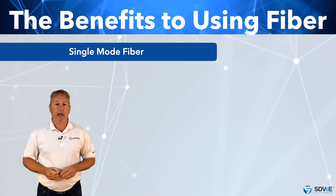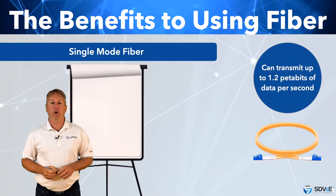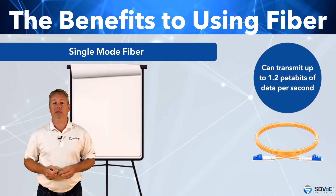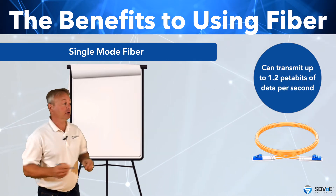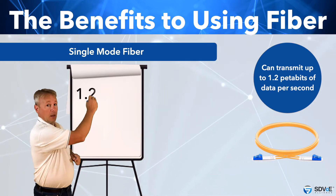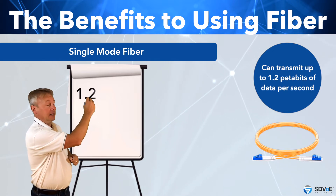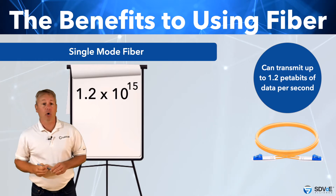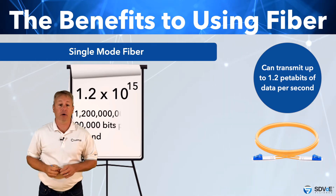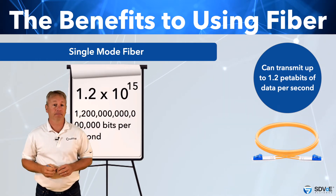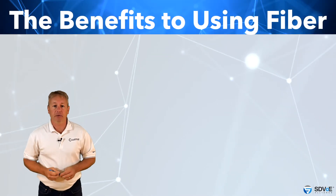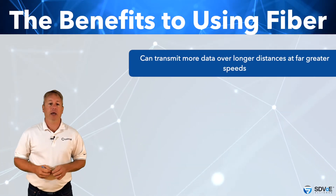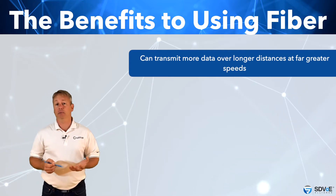Single-mode fibre can theoretically transmit 1.2 petabits of data per second up to an indefinite distance. That's 1.2 times 10 to the power of 15, or 1.2 with 14 zeros after it, bits per second. With these capabilities, fibre can transmit more data over longer distances and at far greater speeds than any other medium we know of.